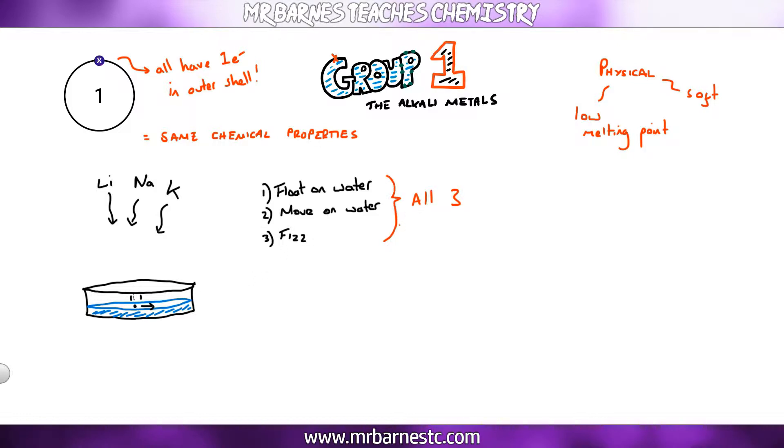The difference is sodium moves slightly faster, it melts so it turns into a molten ball that proves it's got a low melting point, and it gives off more gas so you see more fizzing. When we move down to potassium, it moves even faster than sodium, it sets on fire with a lilac flame, and it gives off more gas so you see more fizzing.